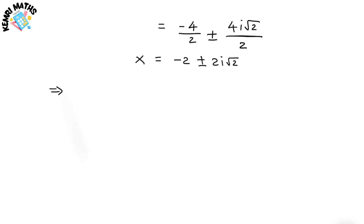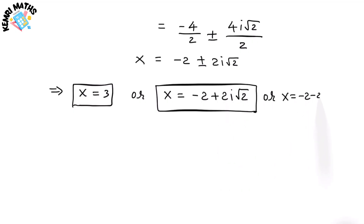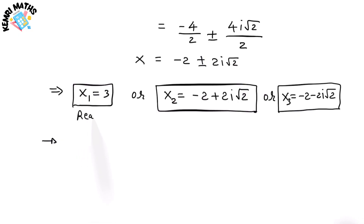So we get three solutions: x = 3 is our real solution, and x = −2 + 2i√2 and x = −2 − 2i√2 are the complex solutions. This is the real root, and these are the complex roots.